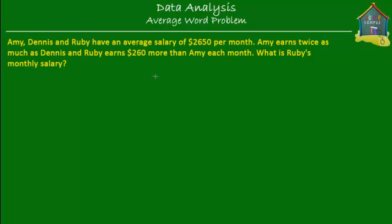Welcome to homecampus.com.sg. Let's solve this word problem on average. Amy, Dennis, and Ruby have an average salary of $2,650 per month. Amy earns twice as much as Dennis, and Ruby earns $260 more than Amy each month. What is Ruby's monthly salary?